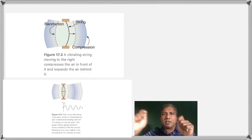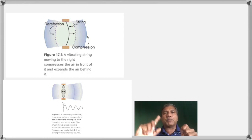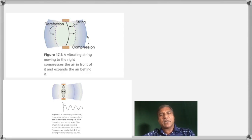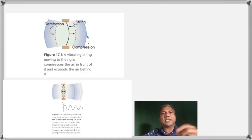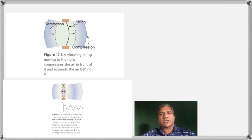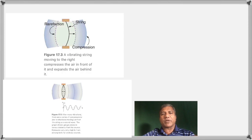When you hit the prong of a tuning fork, it vibrates with a certain frequency. Frequency is the number of waves that pass a certain point in one second, and it is measured in hertz. Now look at this diagram where you have a compression and a rarefaction that is produced when a string vibrates.